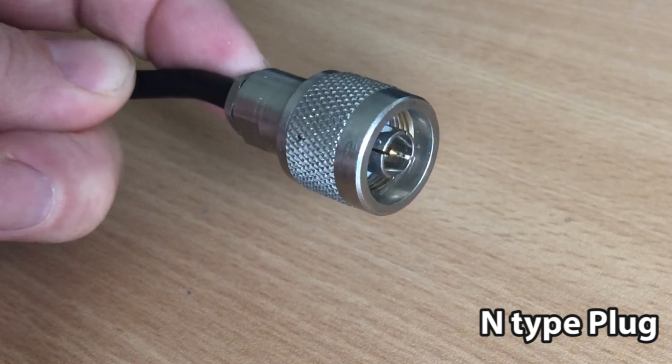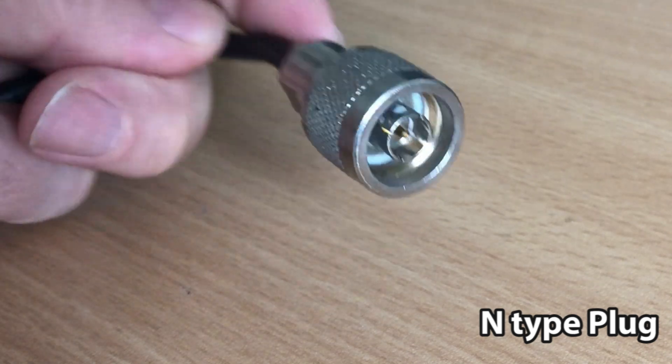Now here's the N plug. This is commonly used with VHF and UHF rigs.